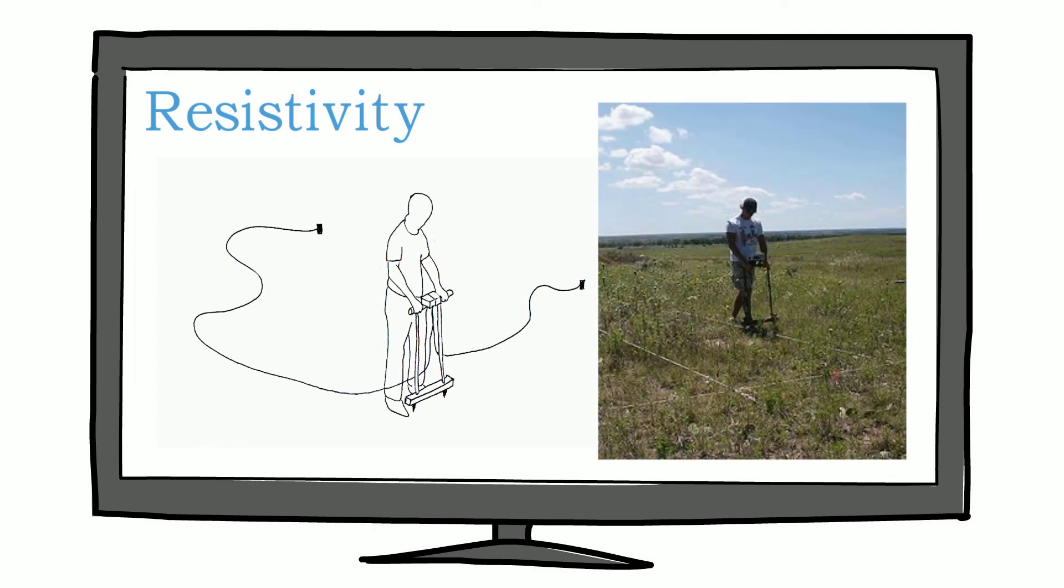Resistivity works by inserting probes into the ground at regular intervals, measuring electrical resistance within the soil's moisture and can locate buried features such as walls, masonry, metalled surfaces, ditches and pits.